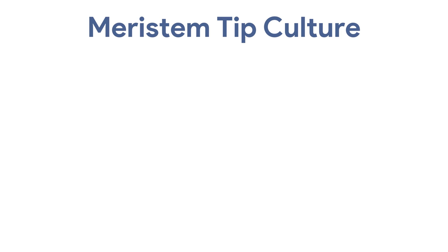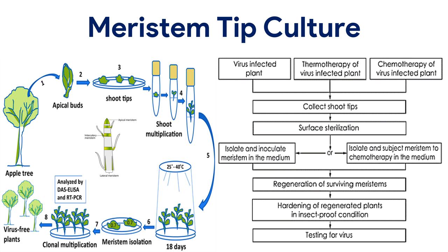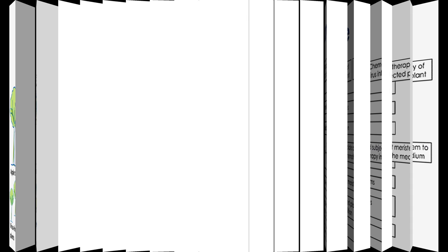Meristem tip culture is one of the most widely used methods for virus elimination from infected plants and production of virus-free plants. Apical meristem culture is a proven means of clonal propagation and for eliminating virus from infected plants.